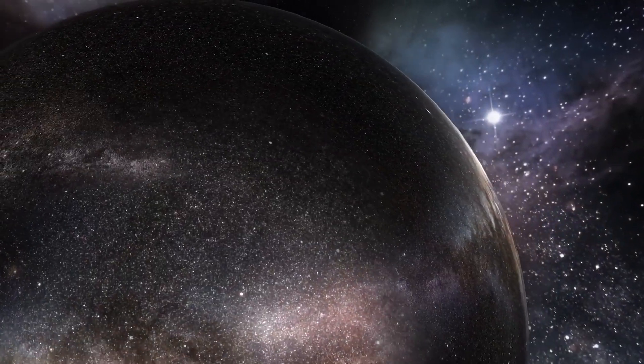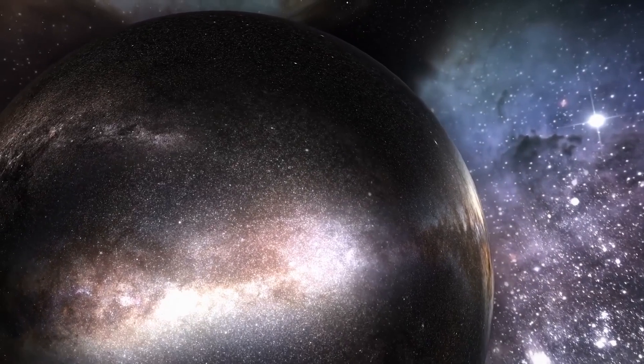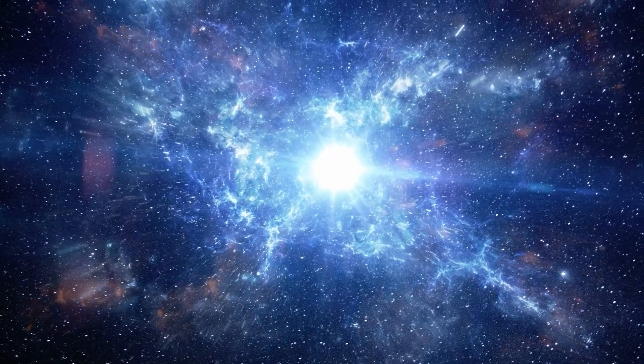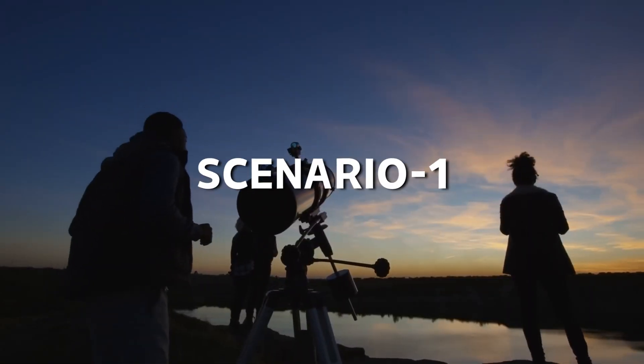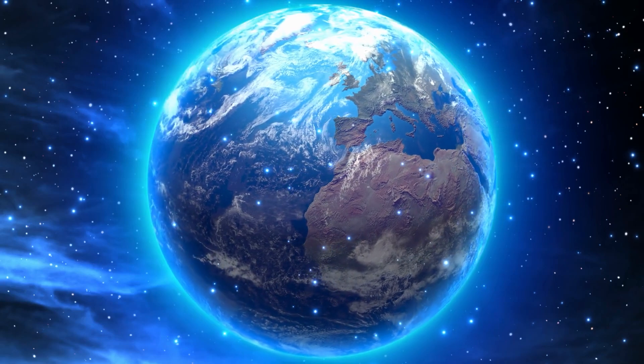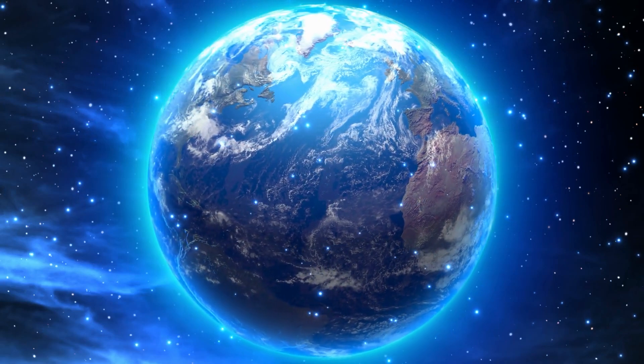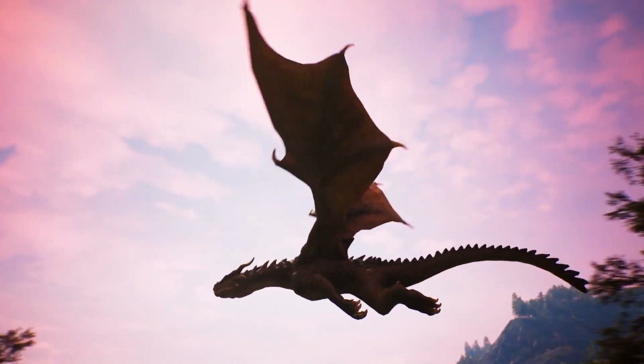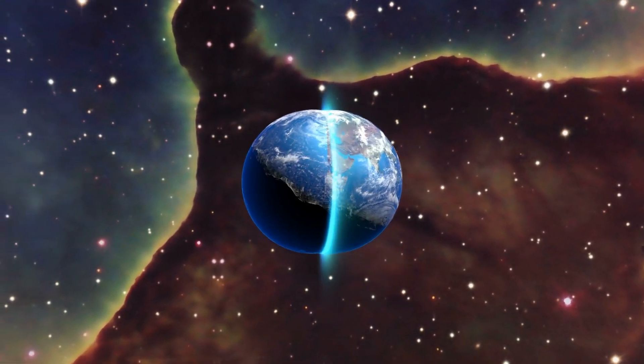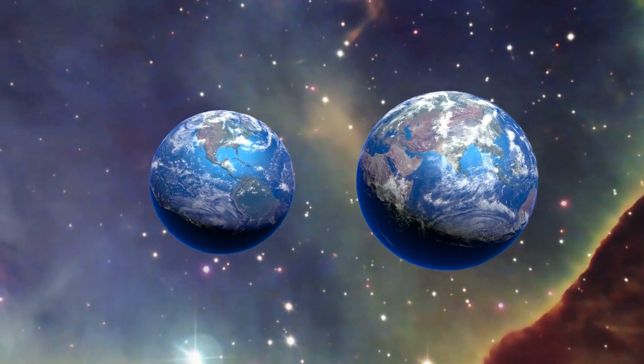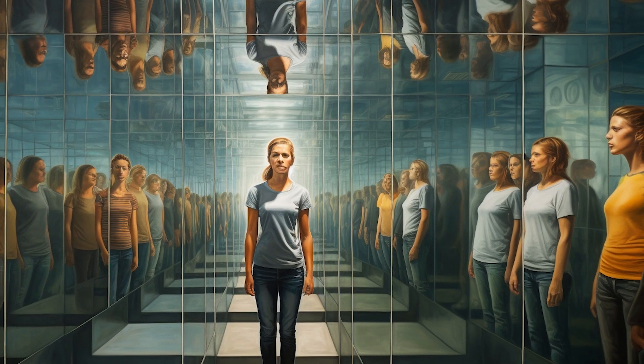Imagine an almost infinite number of realities, all as tangible as our own. This theory fuels the idea that for every universe like ours, there might be countless others, each following a different historical path. In scenario one, imagine a twin universe diverging in history. In our world we have Earth as we know it. In the parallel world, dragons might rule the skies and magic could shape the destinies of kingdoms.